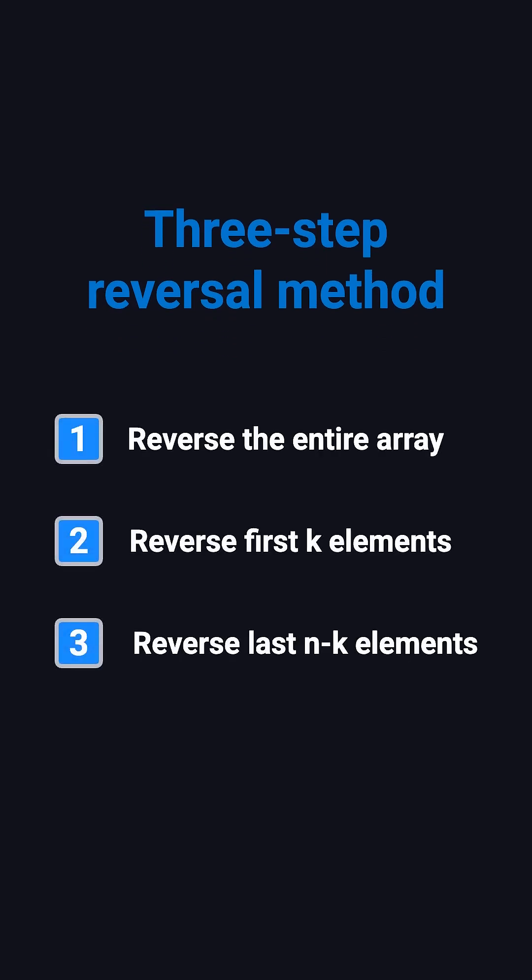Here's the trick. First, reverse the entire array, then reverse the first k elements. Finally, reverse the rest. Just three reversals, and the array is rotated to the right by k steps.